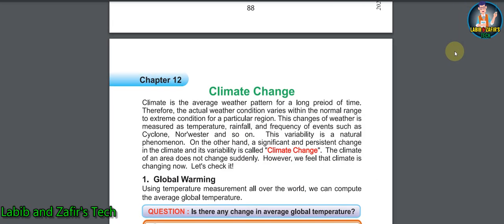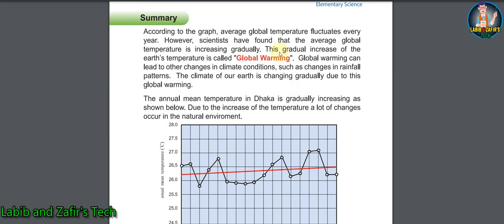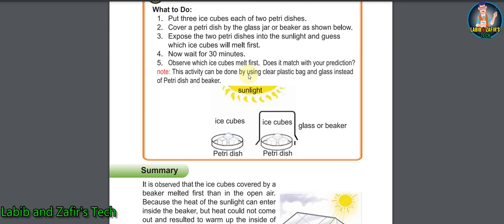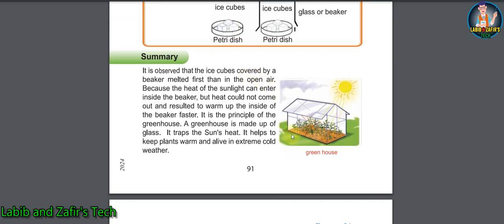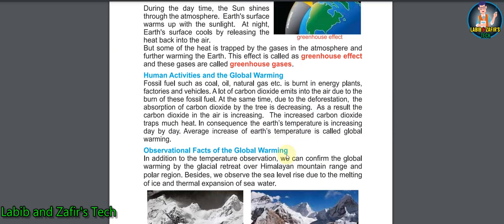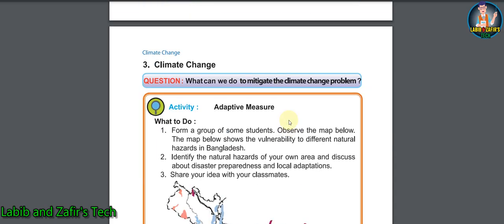So students, we are now in chapter 12, Climate Change. In the first topic we will be about global warming — what is global warming, what are the results of global warming. Then in the second topic you will be able to know about the greenhouse effect, what type of effects are falling due to greenhouse gases.